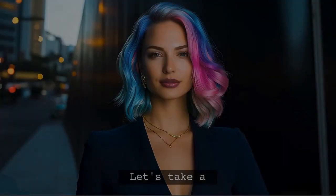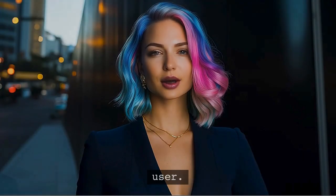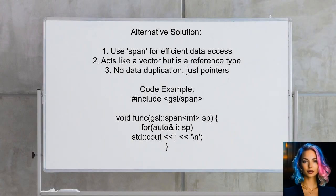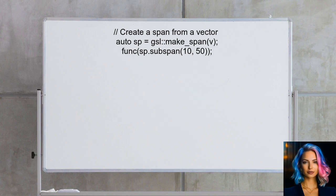One alternative solution is to use a feature called span, which is proposed for inclusion in the C++ standard. A span acts like a vector but is a reference type, meaning it doesn't hold its own data. Instead, it points to the original vector's data, allowing you to pass parts of the vector efficiently.